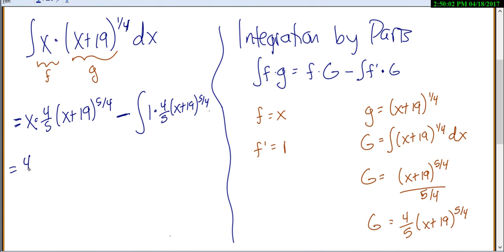Okay, let's see. So let's simplify this a little bit. We have here our 4/5 x times (x plus 19) to the 5/4 minus. Okay, so now when I integrate this, the 4/5 is just going to come out. Now that's (x plus 19) to the 5/4, the integration is going to be just the same as what we did over here.